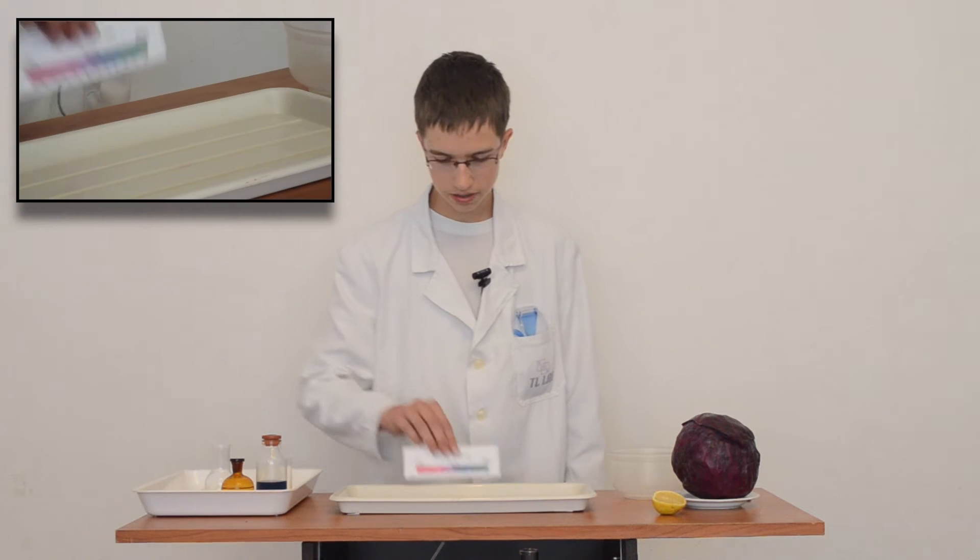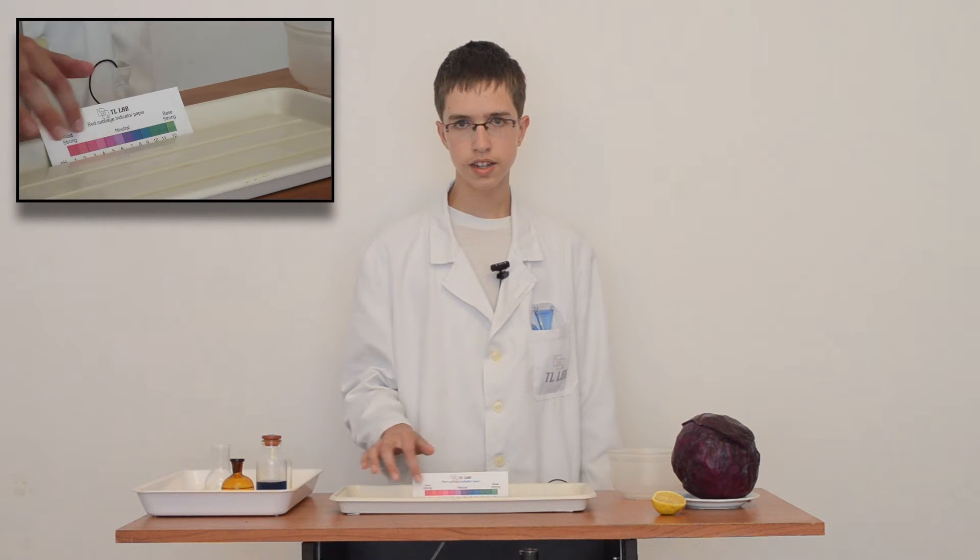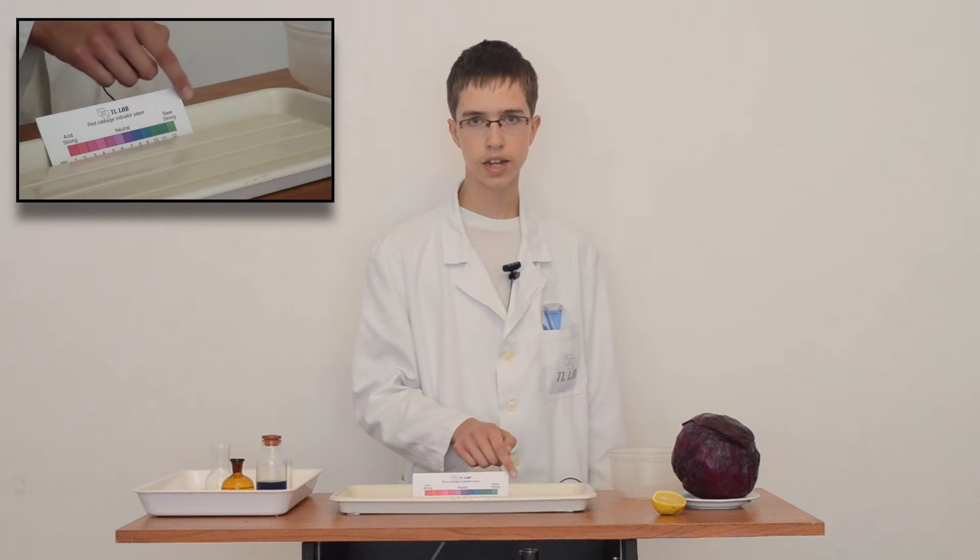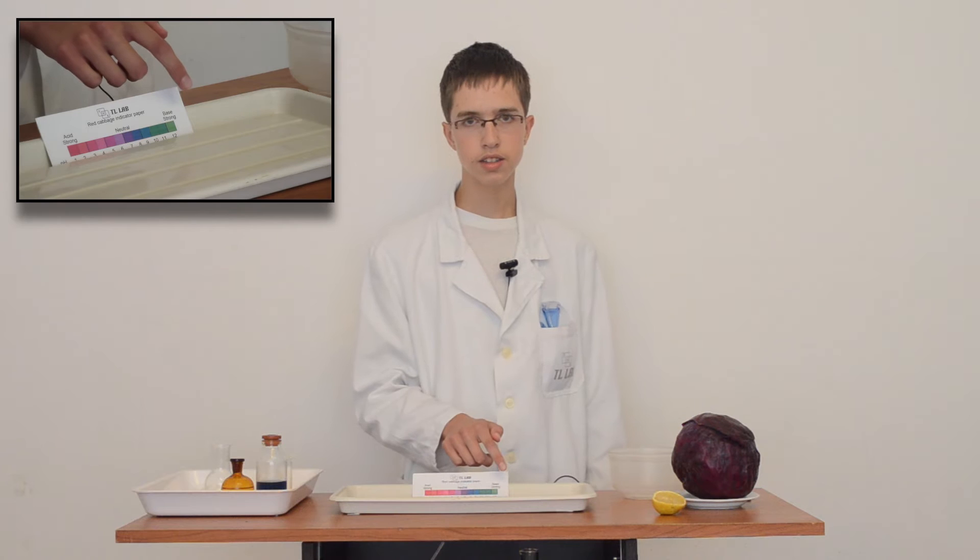Results of indicator changes we compare with indicator paper where we can read if it is acid or base and how strong it is. The scale in which we measure base or acid is shown in pH value, where 7 is neutral, below 7 is acid, and above 7 is base. On 1 is strongest acid and on 14 is strongest base.